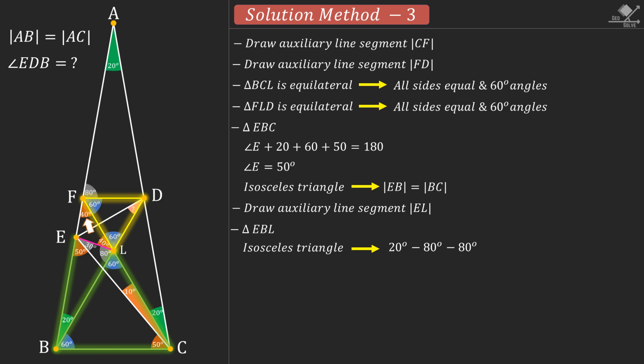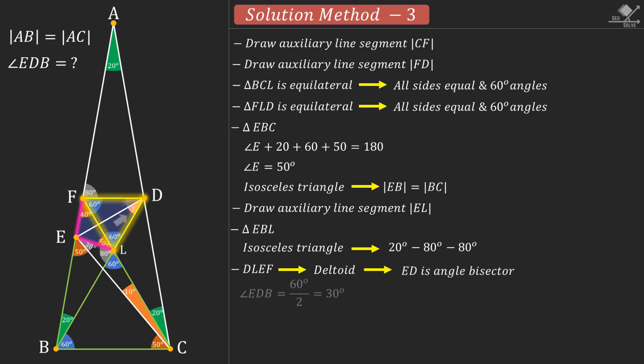Now, focus on this quadrilateral. We notice that this is actually a deltoid. So line segment ED will be an angle bisector. Therefore, our answer will be 60 divided by 2, which is 30 degrees.